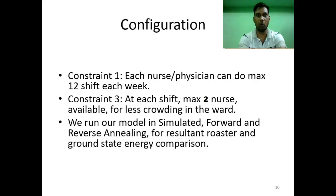Here we mentioned both user defined constraints that is constraint one and constraint three. In our experiment we assumed that each nurse or physician can do maximum 12 shifts in each week and maximum two nurses will be available at each shift for less crowding. Taking these three constraints we will simulate our model in simulated annealing, forward annealing and reverse annealing process to find out an efficient roster and ground state energy.